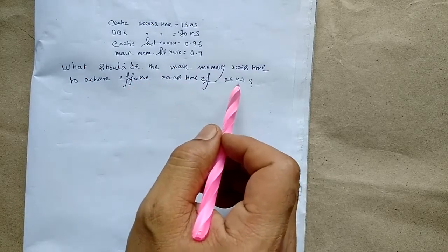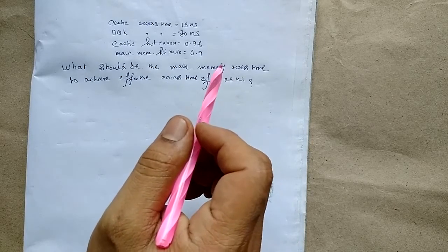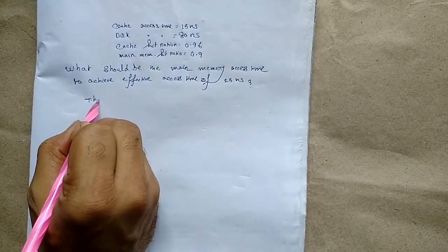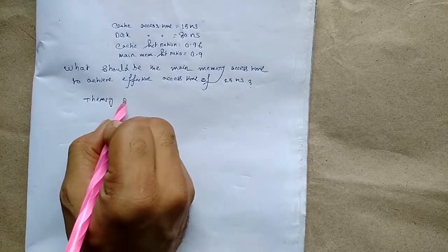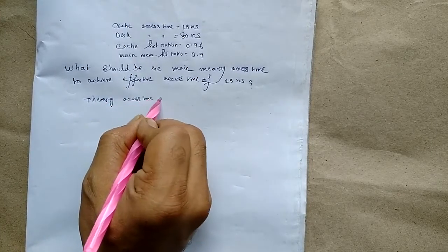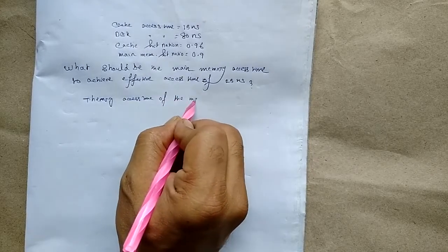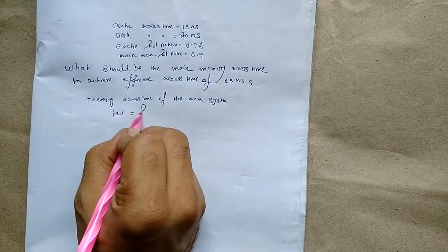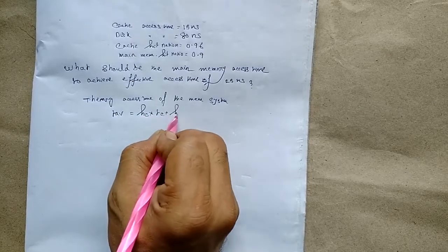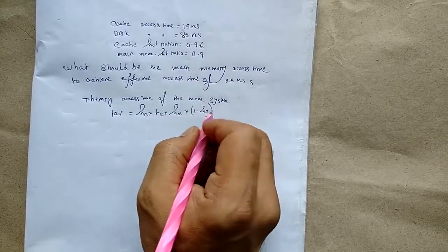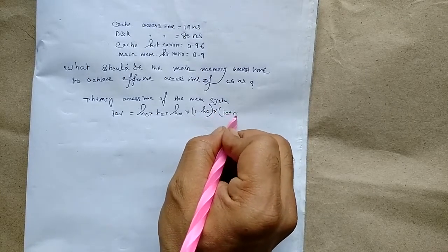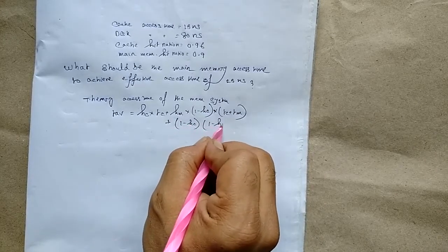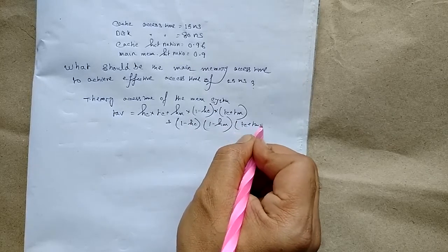In a previous lecture we solved this using a two-level memory system. Now the average access time formula for the three-level memory system will be: T_average = hc × tc + hm × (1 − hc) × (tc + tm) + (1 − hc) × (1 − hm) × (tc + tm + ts).